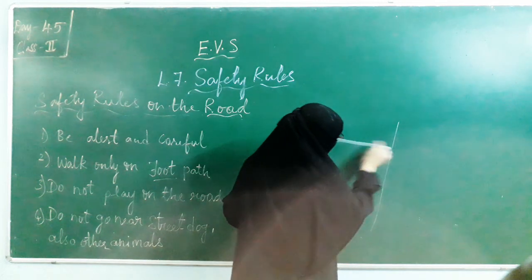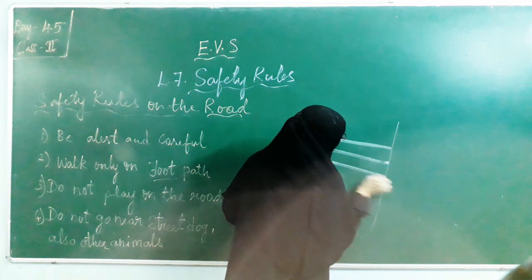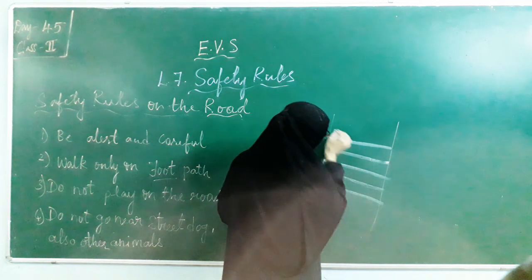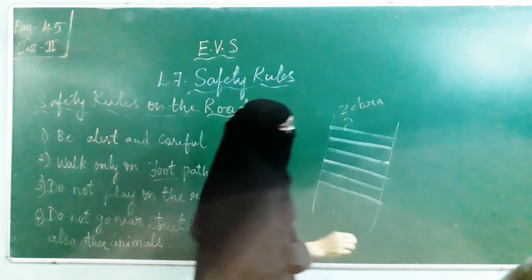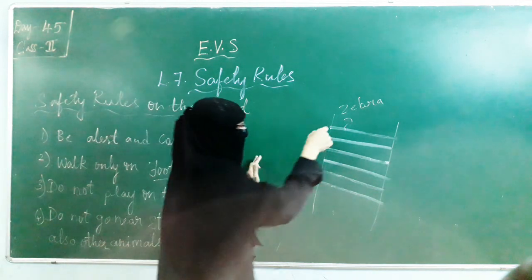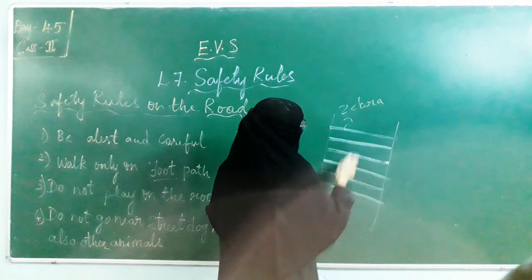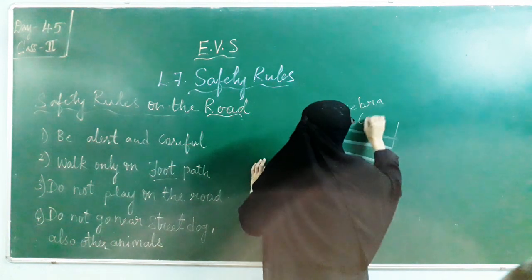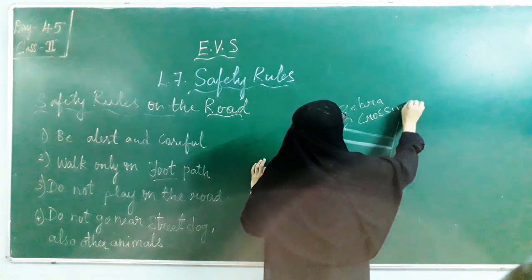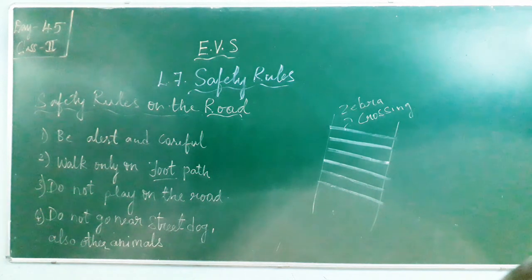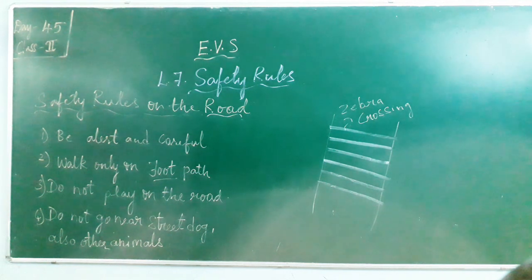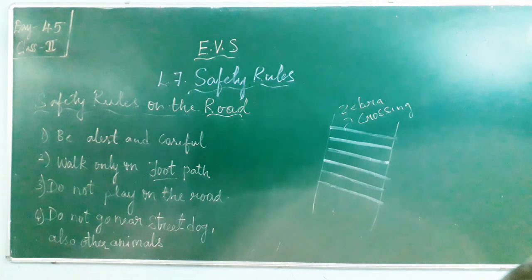When you have to cross the road, on the road we have a zebra crossing — it is black and white stripe lines, just like a zebra's stripes. When you need to cross the road, first look to the right, then to your left, and once again to your right. Make sure no vehicle is coming close before you cross.